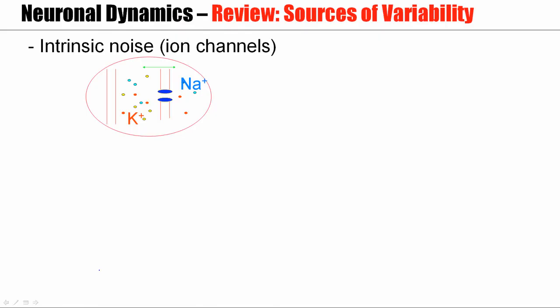There are intrinsic noise sources that contribute to variability. Ion channels open and close stochastically. There's a finite number of ion channels working at finite temperature. This is an intrinsic noise source.